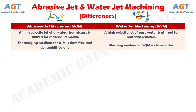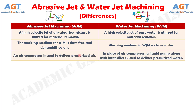Number 2: the working medium for abrasive jet machining is dust-free and dehumidified air, whereas the working medium in water jet machining is clean water. Number 3: in abrasive jet machining, an air compressor is used to deliver pressurized air, whereas in water jet machining, a liquid pump along with an intensifier is used to deliver pressurized water.